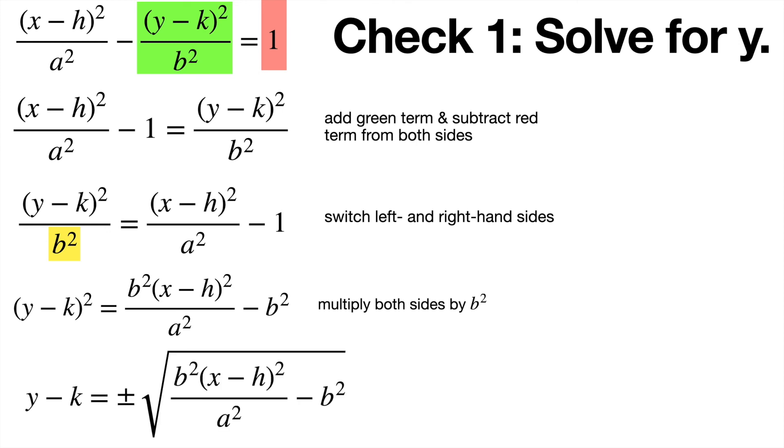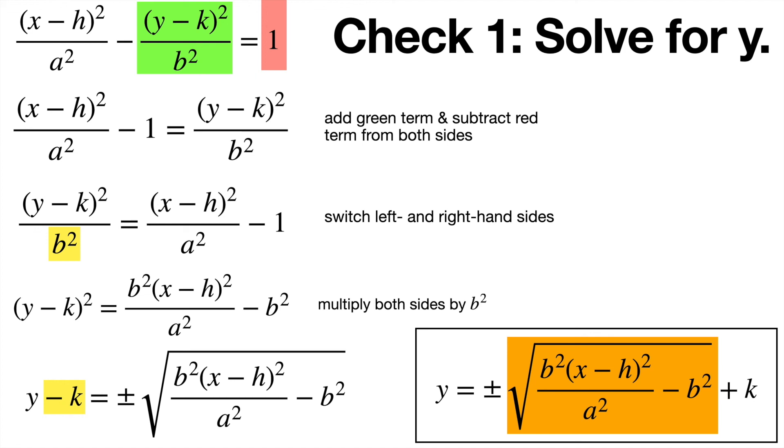And then we multiply both sides by b squared in order to further get the y term alone. And now we can take the square root of both sides. Remember when you take the square root of both sides, we always have a plus or minus because there are two answers when you take a square root of some number. And then you add k to both sides, and then we get the answer.